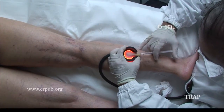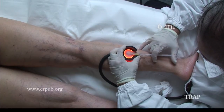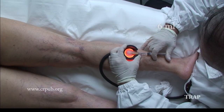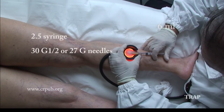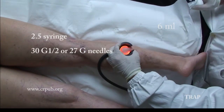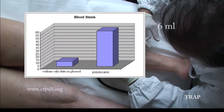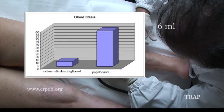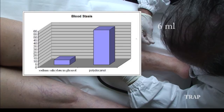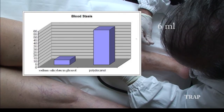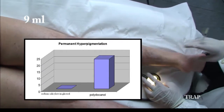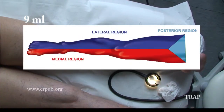The efficacy of this treatment is manifested by the disappearance of the vessels of the superficial circulation. TRAP uses a 2.5 ml syringe, 30.5 g or 27 g needles, and a sclerosing solution at a non-obliterative concentration — a 4% to 6% solution of sodium salicylate in a buffered alkaline hydroglycerin vehicle. The lower limb is subdivided into three functional regions: medial, posterior, and lateral.